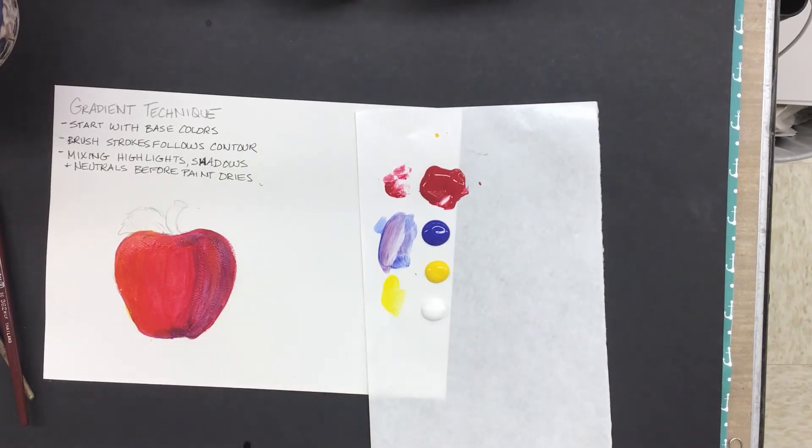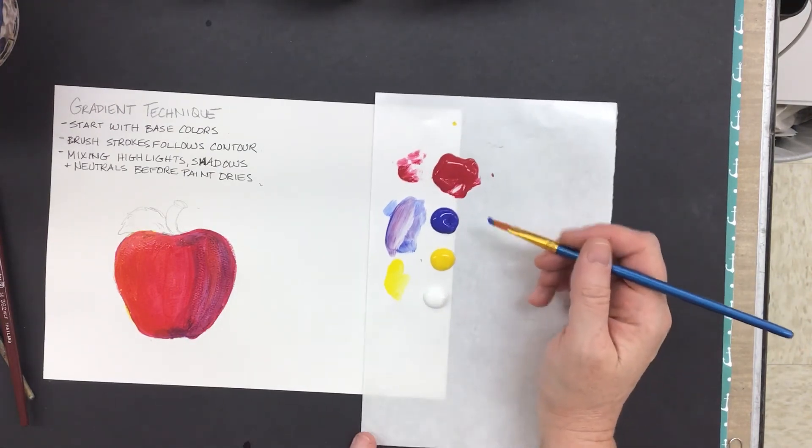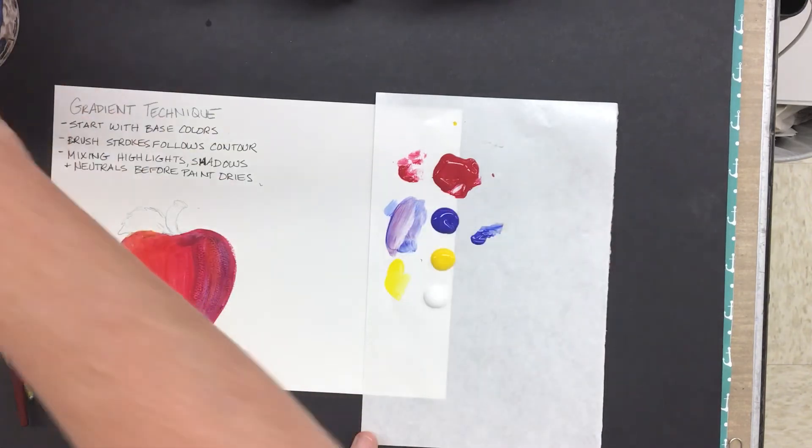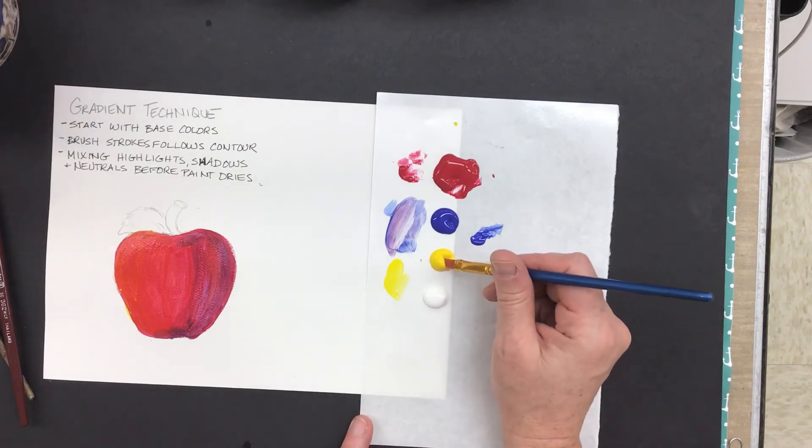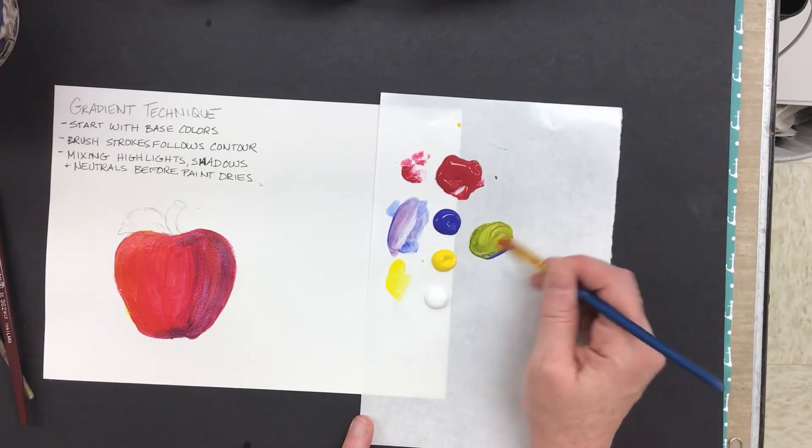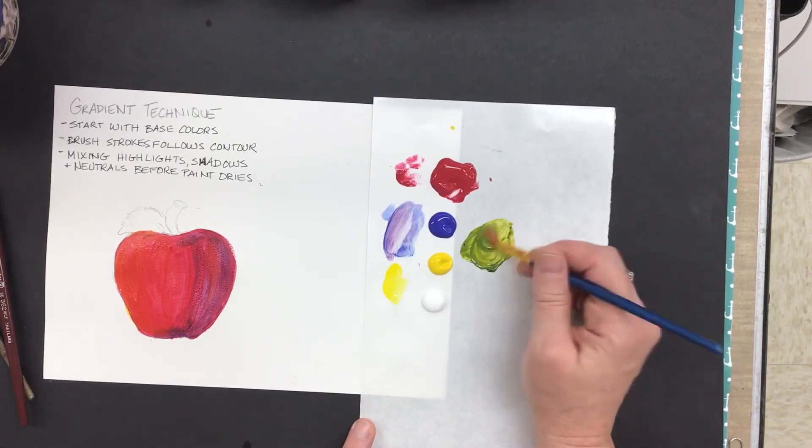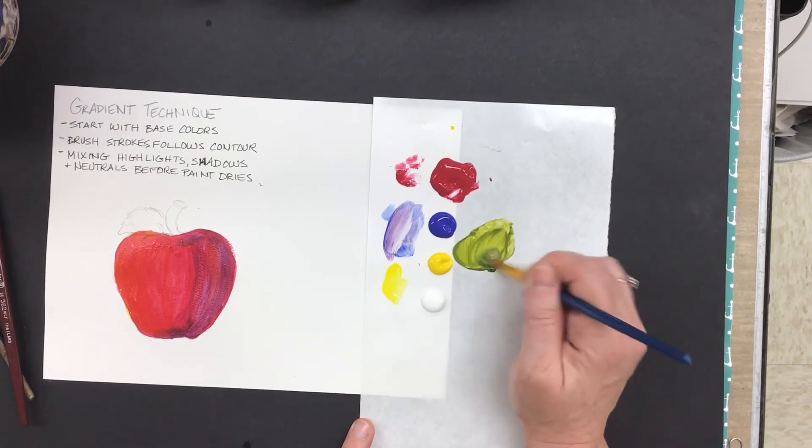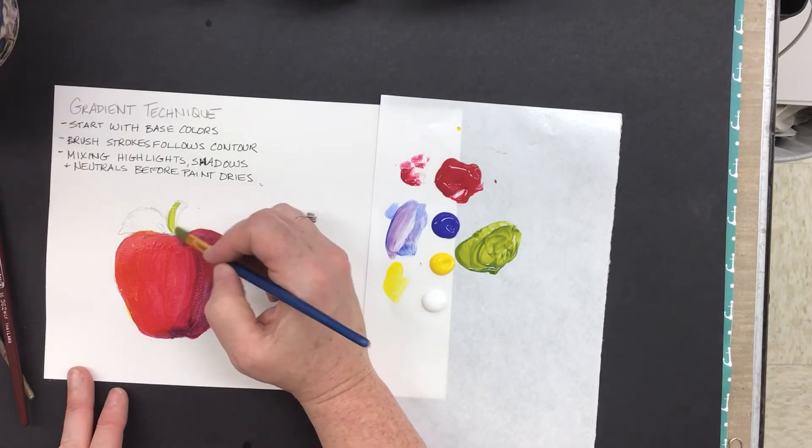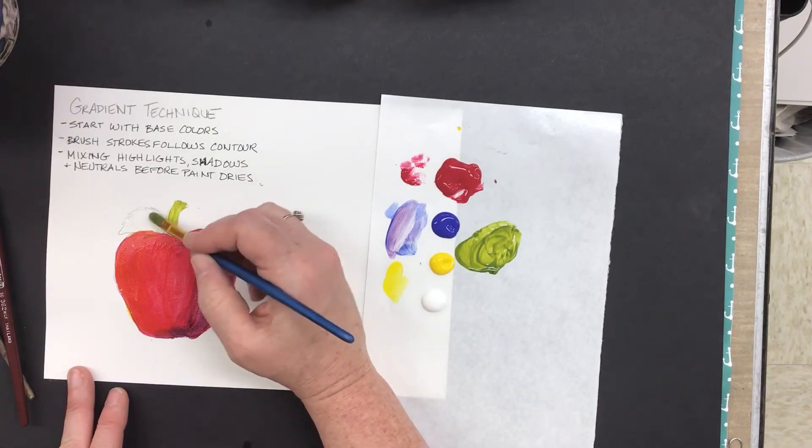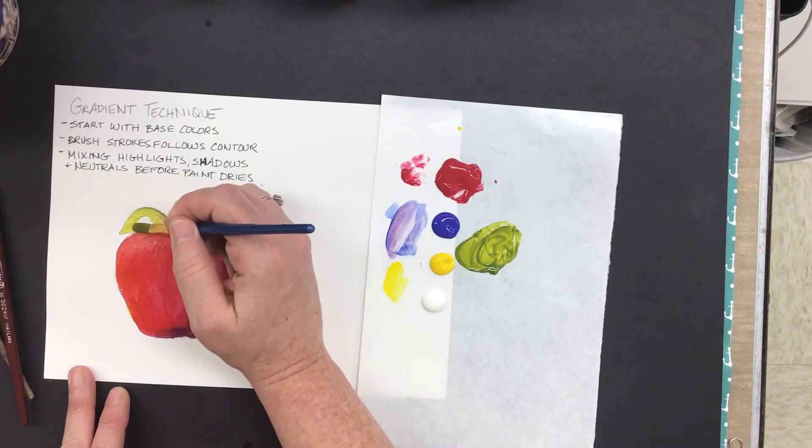All right, so I'm going to let that area dry before I put my bright highlight in with the white, and I'm going to go ahead and make my stem and my leaf. So I'm going to make that green. You've got to make your secondary colors because all you have are your primaries. Anytime you're using blue, it's going to take twice as much yellow as blue, so always start with a very small amount. You can add if you need to.